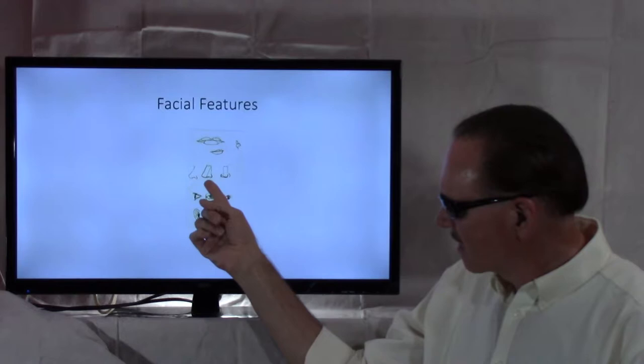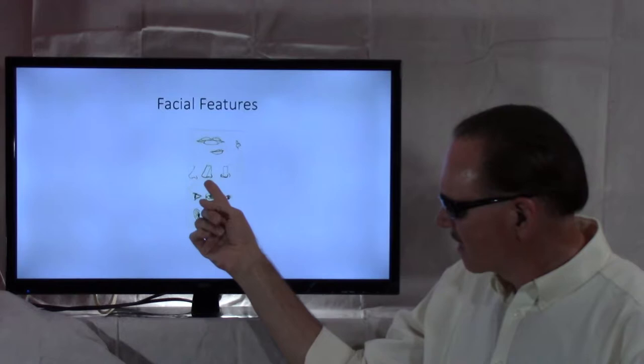If you're looking three-quarter, just as we did with the lips and we did at the nose, you see part of the side and part of the front.